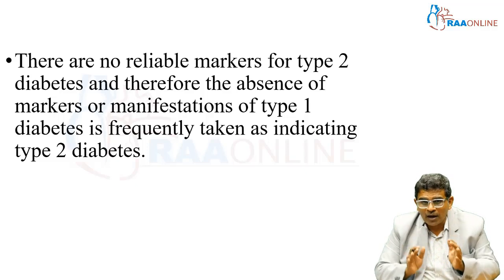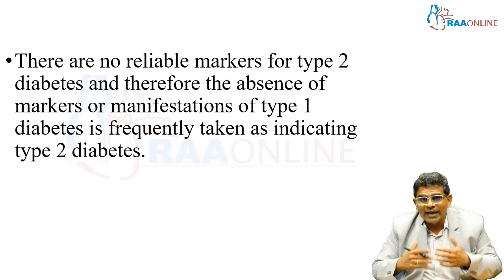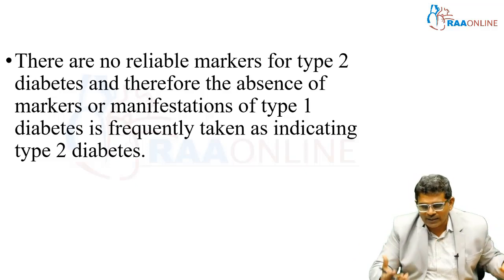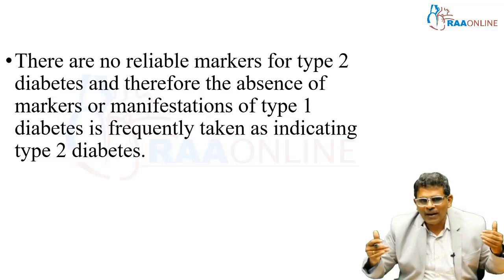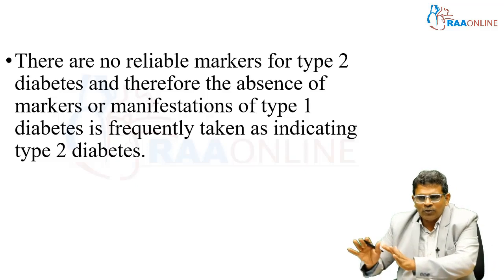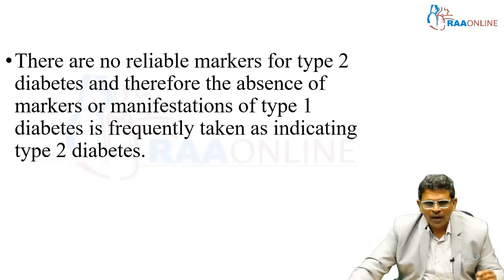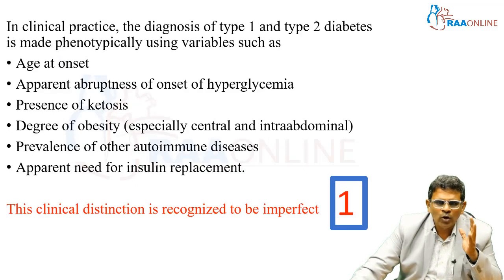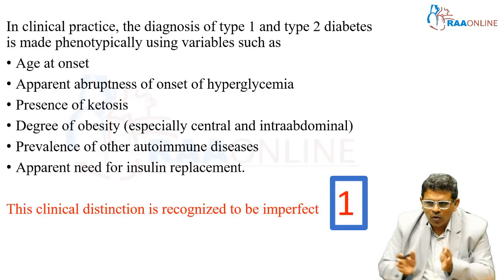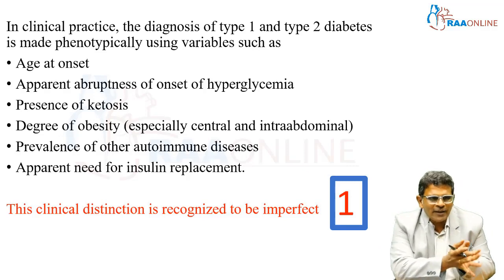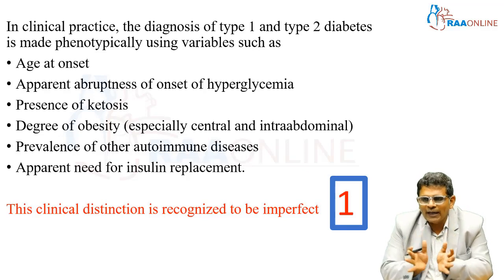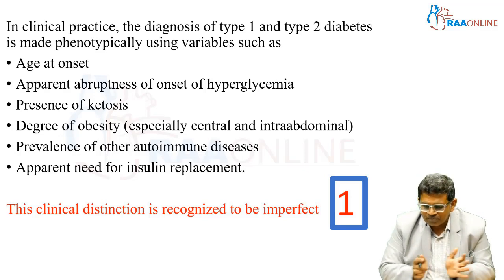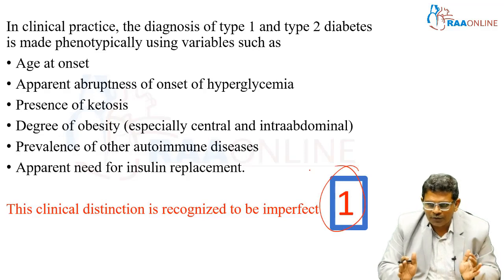The absence of Type 1 markers is frequently taken as an indicator of Type 2 diabetes. If auto-antibodies are negative or the patient does not fit into Type 1, we call them Type 2. So Type 1 is auto-antibody positive, and Type 2 is auto-antibody negative. However, in clinical practice, when a patient comes to us, we don't actually check for antibodies as ADA recommends — rather, we use phenotypical classification. This is where the first source of confusion arises.